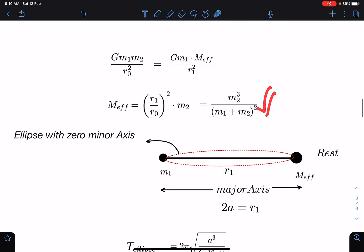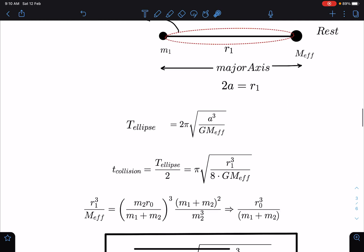From the logics which I have explained earlier, so I can say this time of collision is T ellipse by 2, only for one side not for coming back. So I can write this as π times the square root of r1 cubed by 8 G m effective.